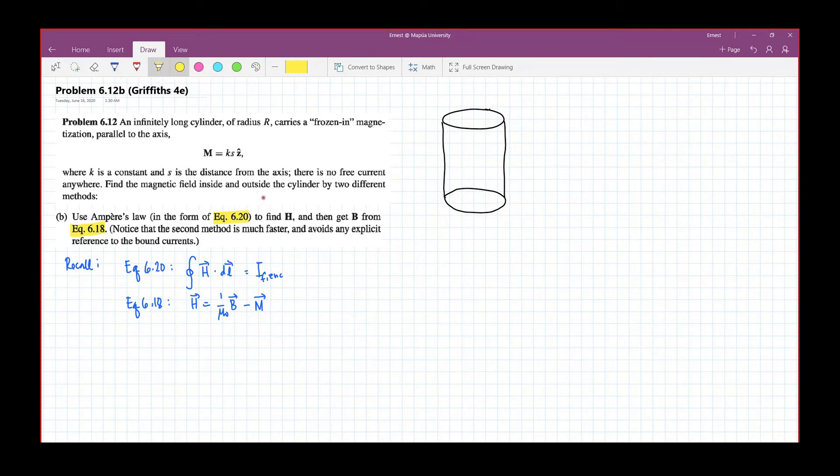Now, the key word here is that there is no free current anywhere. So what does it mean? It means that the free enclosed current is zero.